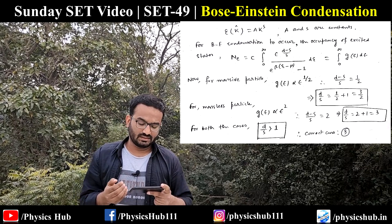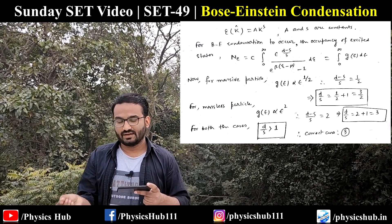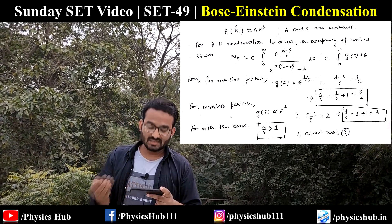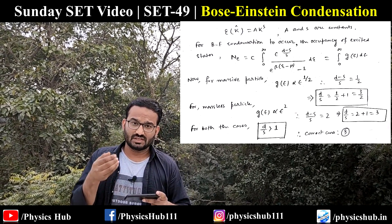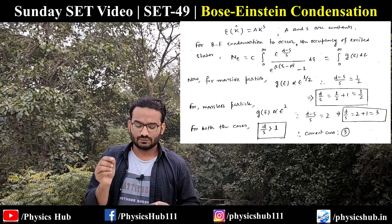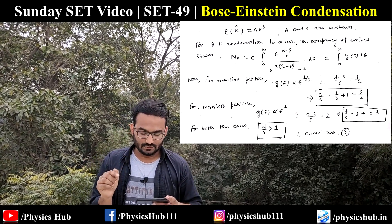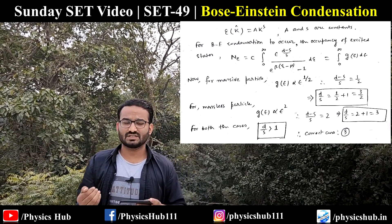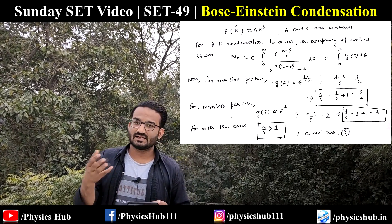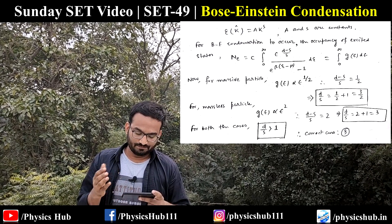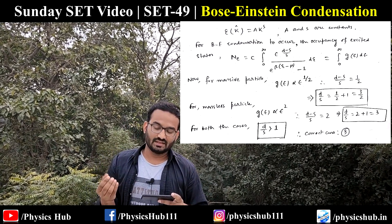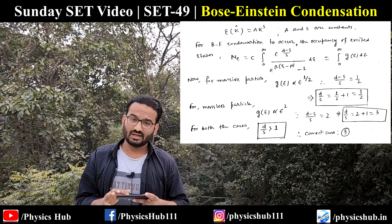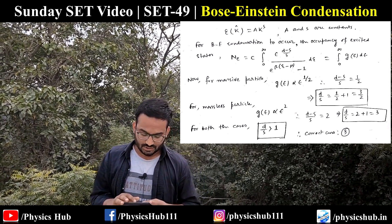For massive particles g(E) ∝ E^(1/2), so (d−s)/s = 1/2, giving d/s = 3/2. For massless particles g(E) ∝ E², so (d−s)/s = 2, giving d/s = 3. In both cases d/s > 1. This gives us the idea that d/s must always be greater than 1, whether for massless or massive particles. So option C is the correct option.